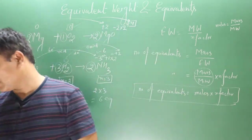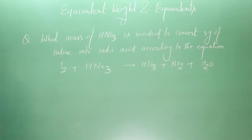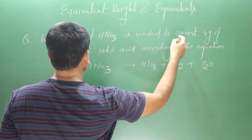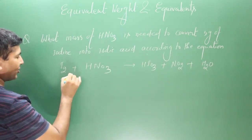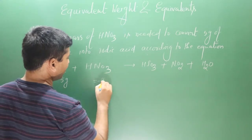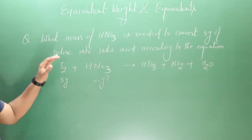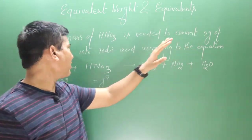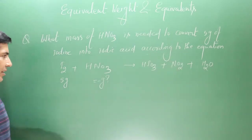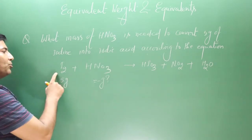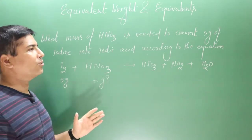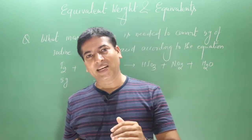Let me take an example. The question asks: what mass of nitric acid is required to convert 5 grams of iodine into iodic acid? The equation given is unbalanced — the left side has 2 iodine, the other side has only 1. But we don't need to balance it because we will apply the concept of number of equivalents.